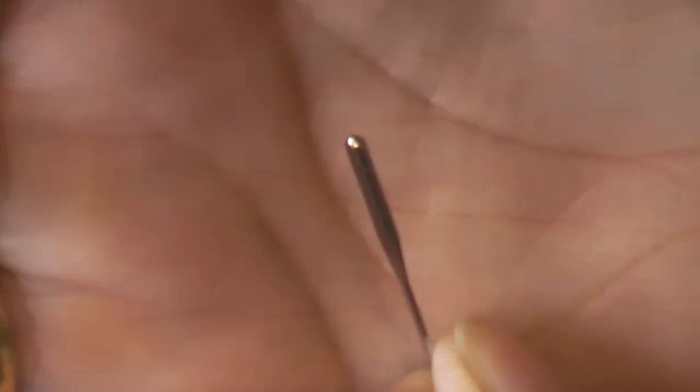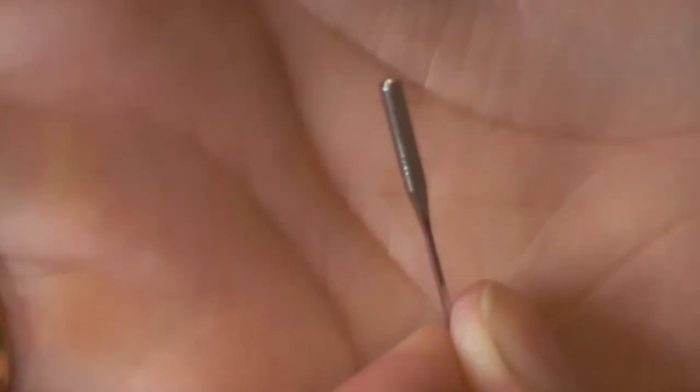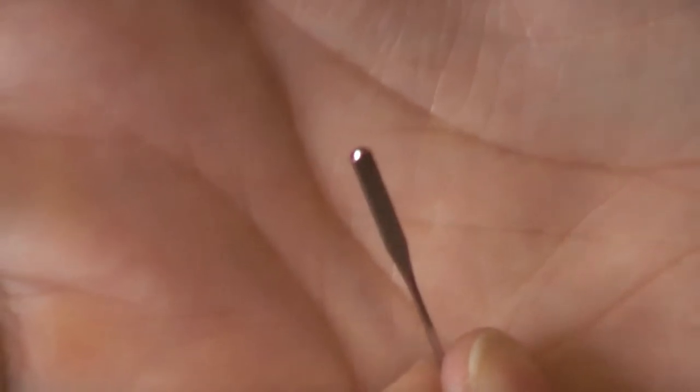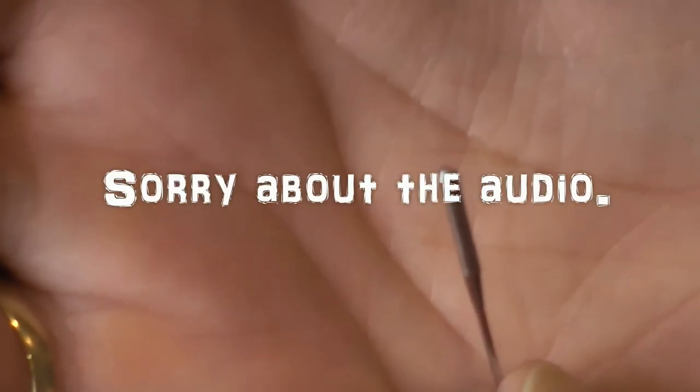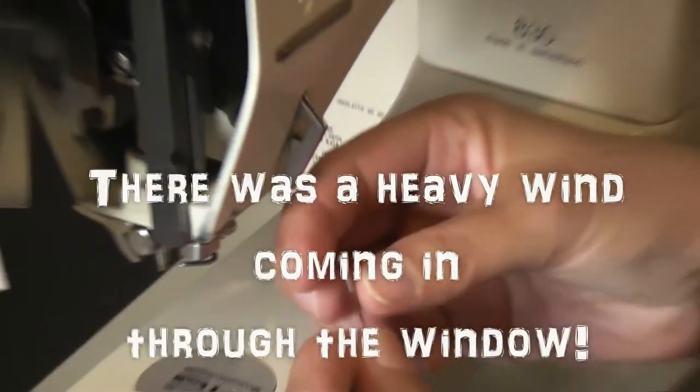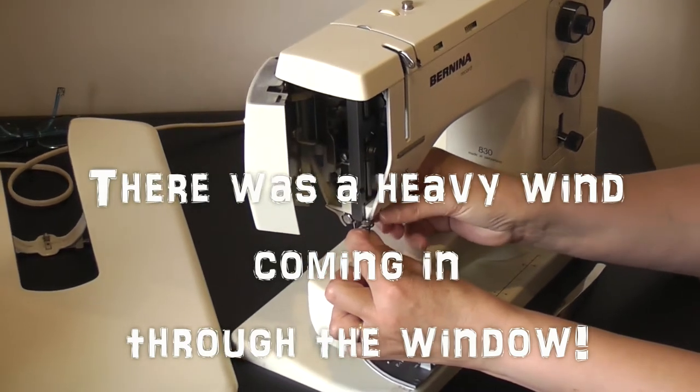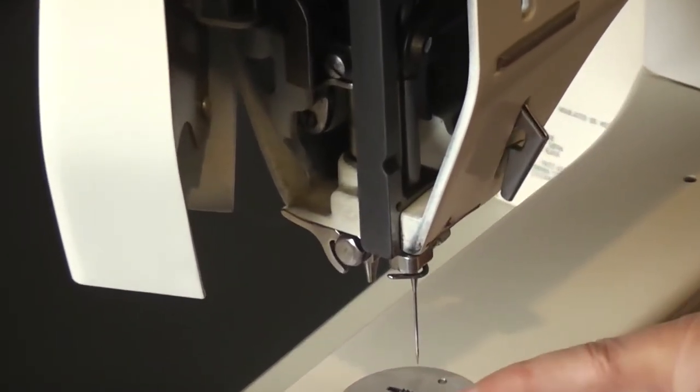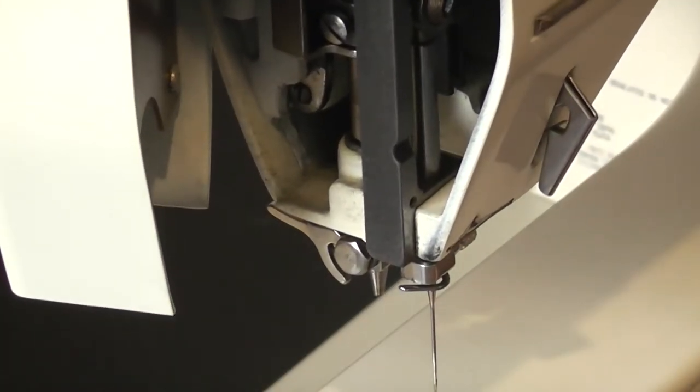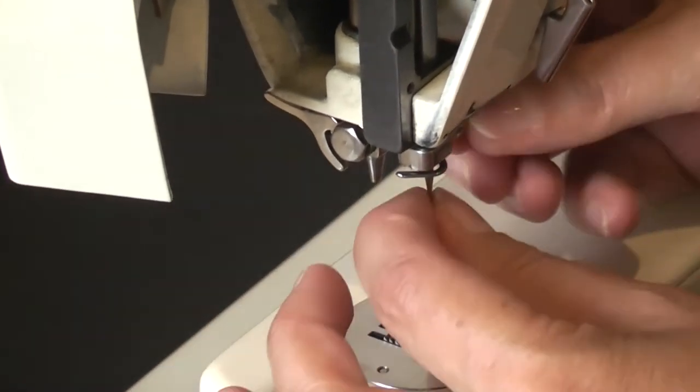Now a sewing machine needle has got a fat top and a narrow bottom, and at the narrow bottom is the eye of the needle. But the bit we're worried about at the moment is the top. It is rounded in the front and at the back it's flat. So we want the flat to the back when we're installing the needle. Feel that at the back, put the needle in, screw it in, and make sure it's nice and snug. We don't want that coming off and we certainly don't want it falling through the stitch plate into the mechanism below.